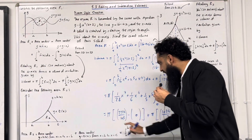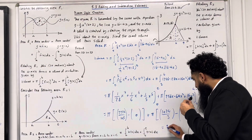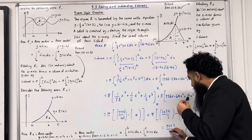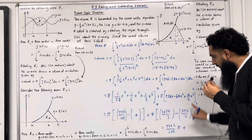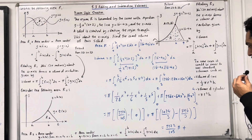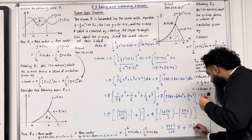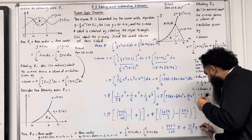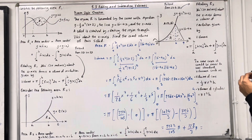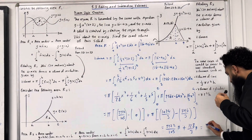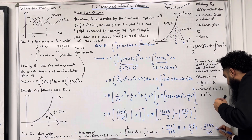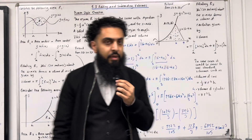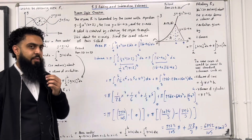π multiplied by 2272/105 gives 2272π/105, and π multiplied by (1024/3 − 896/3) simplifies to 128π/3. Adding these two together gives 6752/105 π unit cubed, which completes the second exam style question.